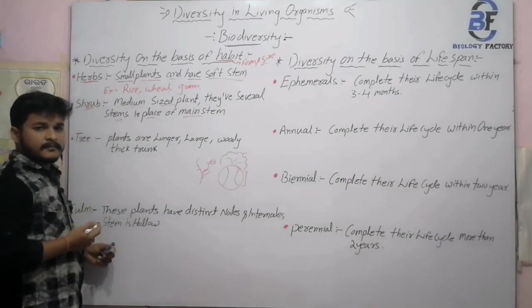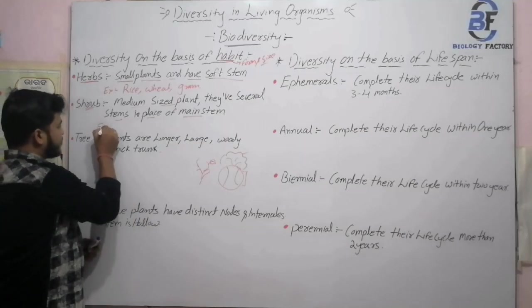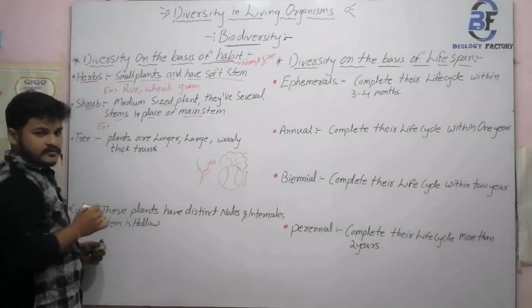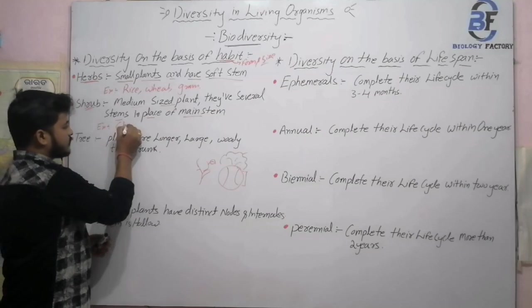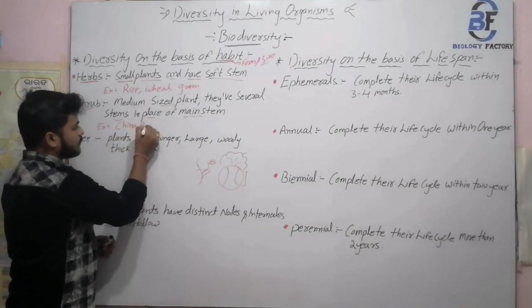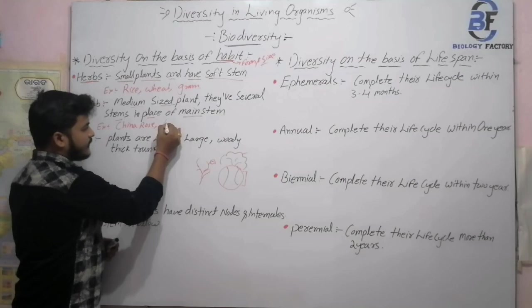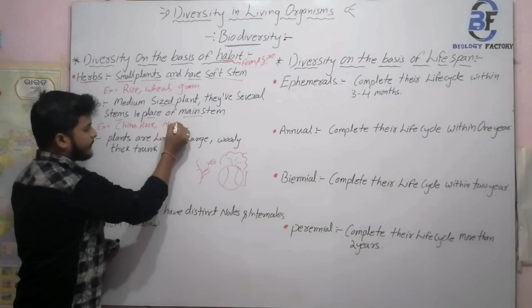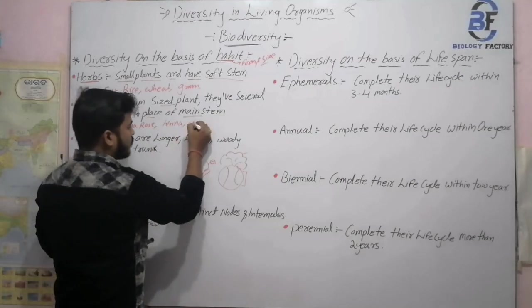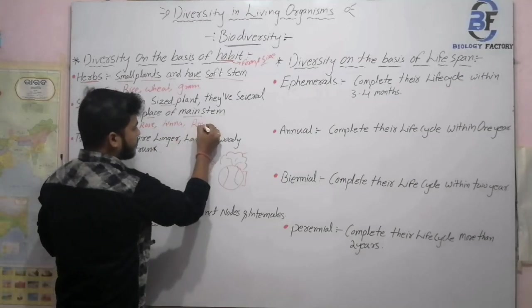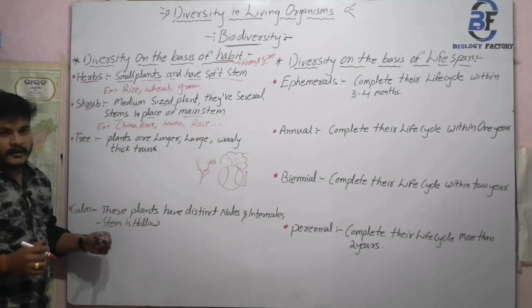The basic examples of shrub plants are China rose, hina plant, and rose. These are the basic examples of shrub plants.